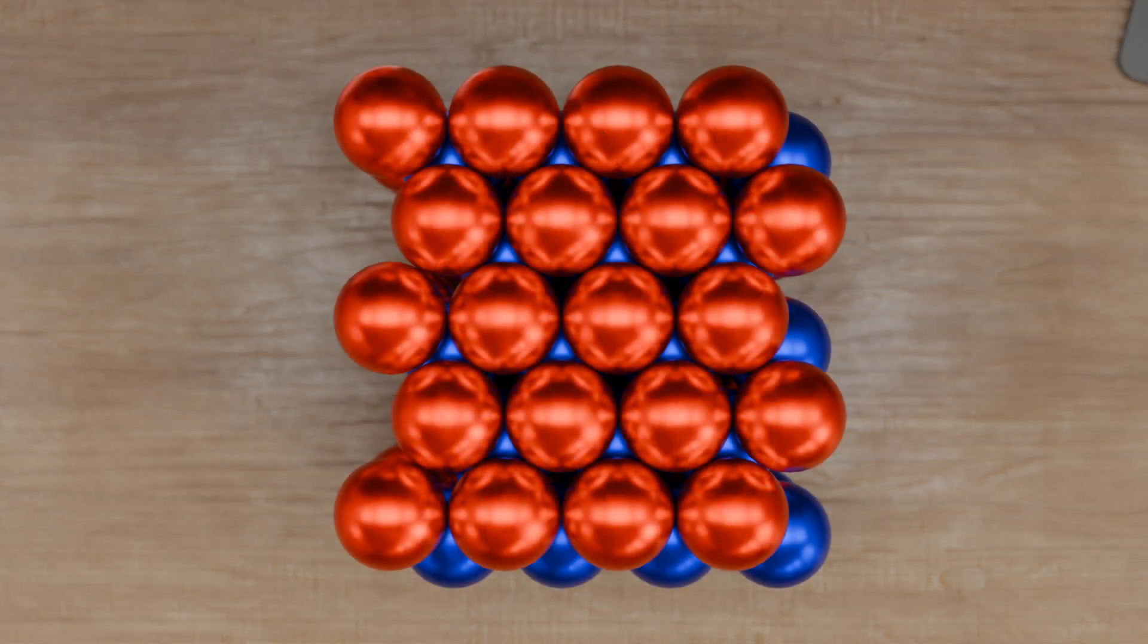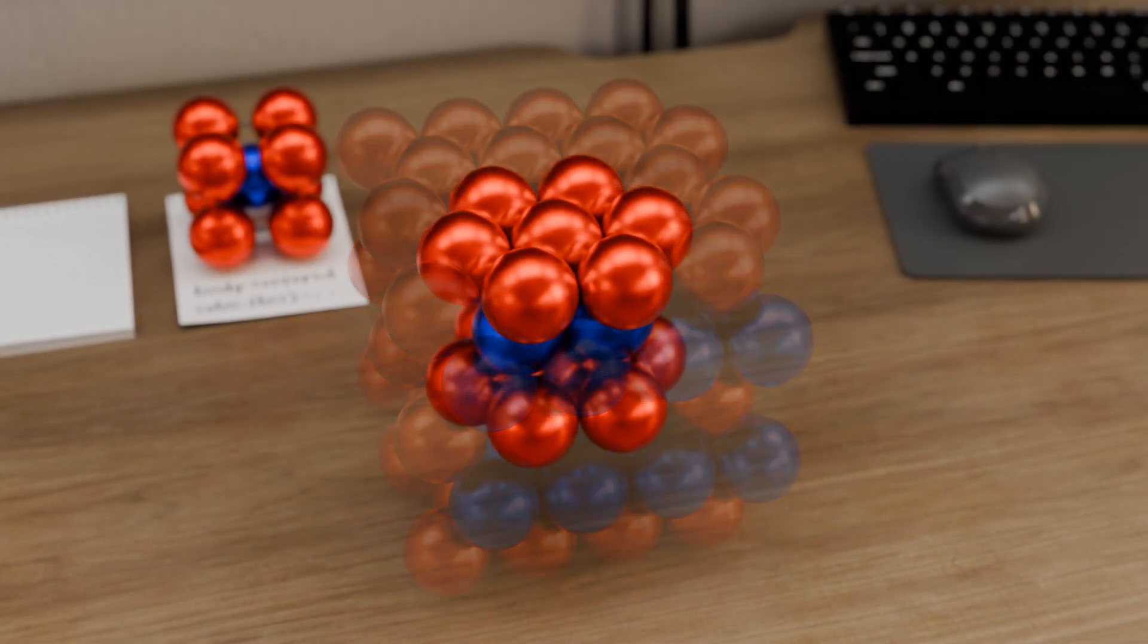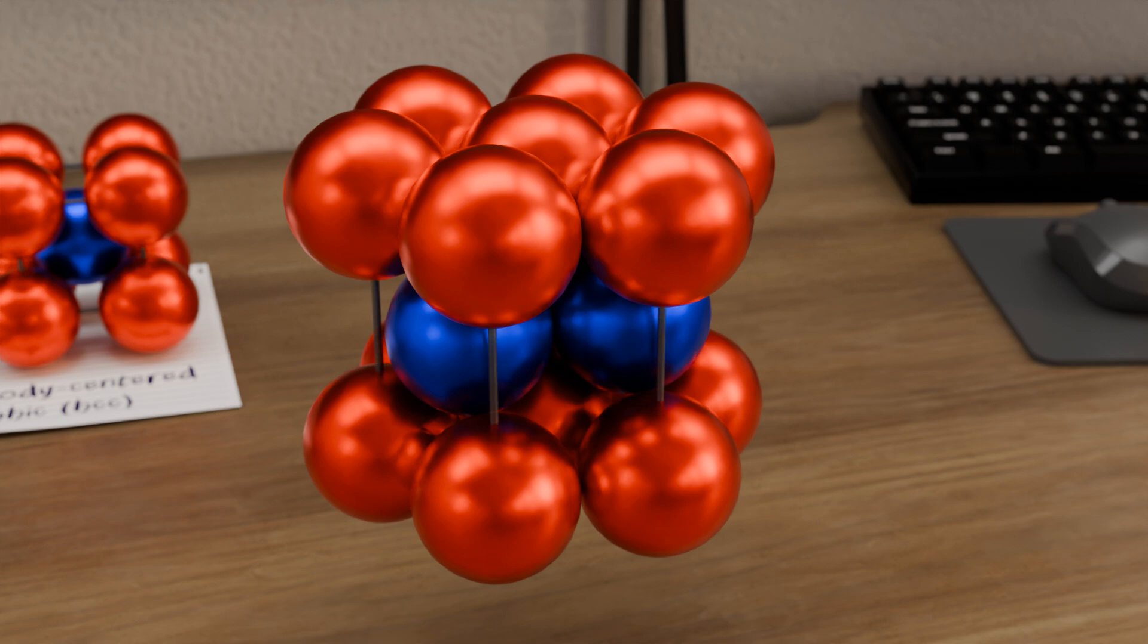Note that in the top view of this lattice structure, there are always gaps through which you can look, so to speak. For such a hexagonal densest packing of atoms, the unit cell can be traced back to a hexagonal base surface. In the center of the unit cell there are three more atoms, which sit in the resulting atomic gaps of the base surface and the top surface.